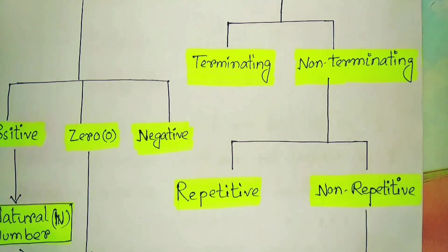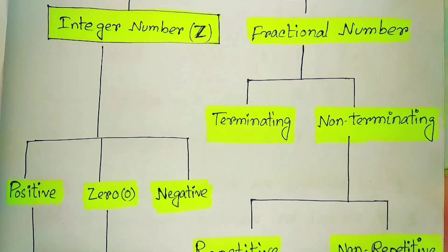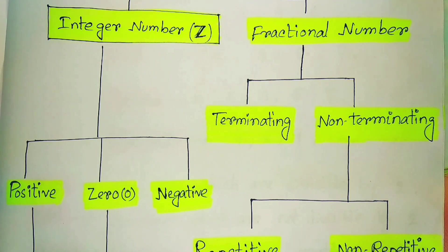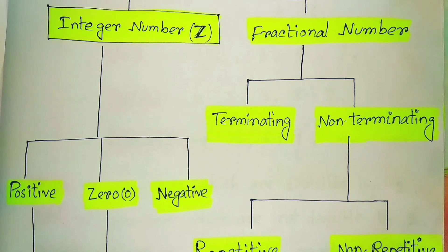If we divide the fractional number, it should be divided as terminating and non-terminating fractions. Fractions are numbers like 0.32, 0.755, 732 — these are all fractional numbers. We divide fractional numbers into two parts: terminating and non-terminating fractional numbers.